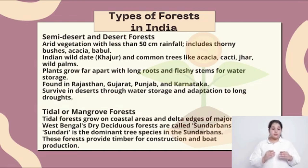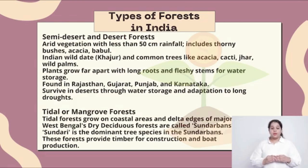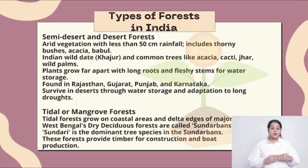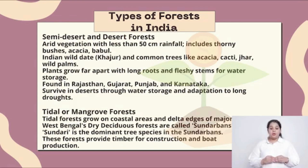Tidal or mangrove forest. Tidal forests grow on coastal areas and delta edges of major rivers. West Bengal's tidal deciduous forests are called Sundarbans. Sundari is the dominant tree species in the Sundarbans. These forests provide timber for construction and boat production.